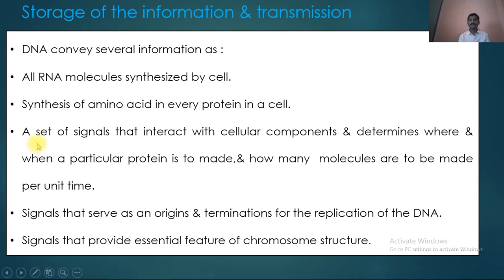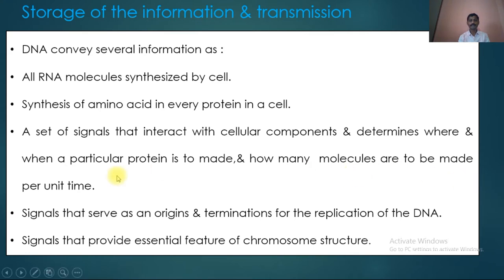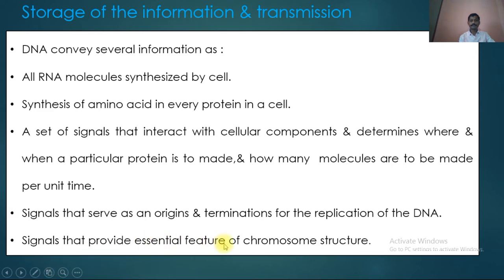Regarding how a protein is expressed in a cell: a set of signals interact with cellular components and determine where and when a particular protein is to be made, and how many molecules are to be made per unit time. There are also signals that serve as origins and termination points for DNA replication — specific regions on DNA where replication starts, and nucleotide sequences that terminate replication. Additionally, there are signals that provide essential features of chromosome structure.